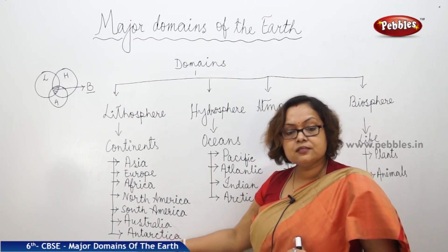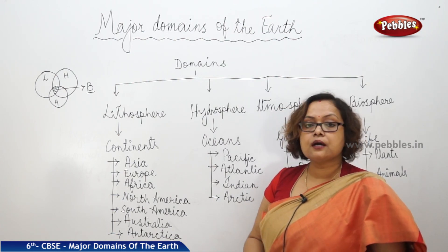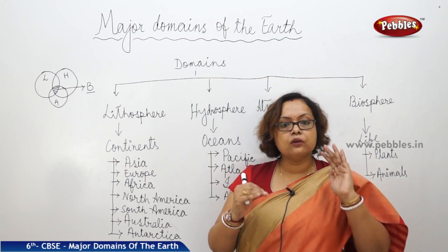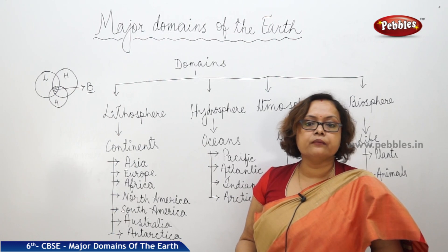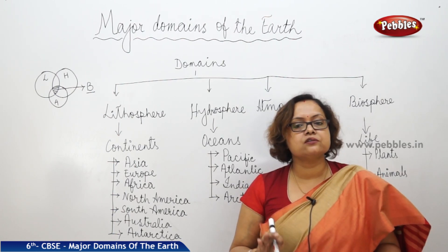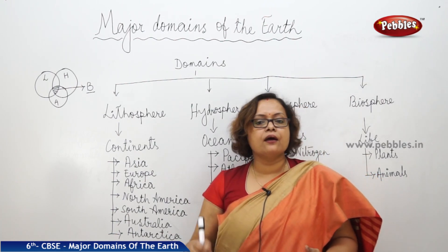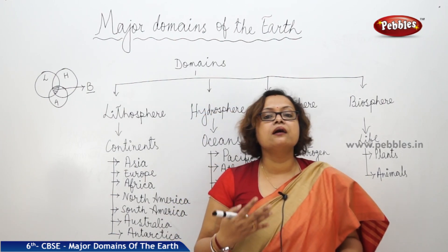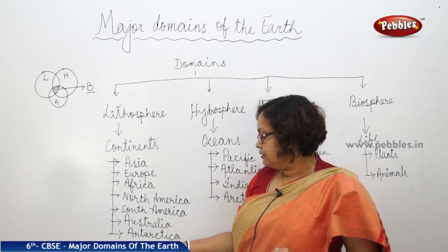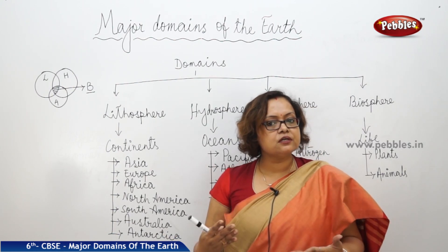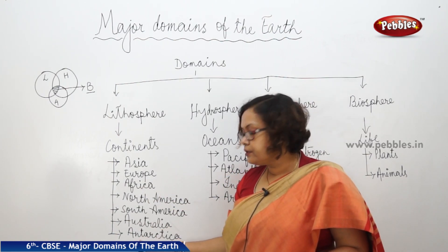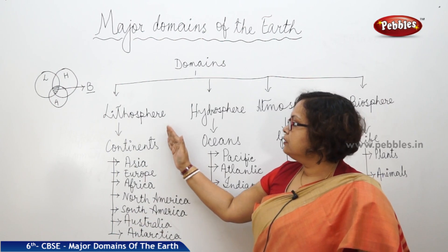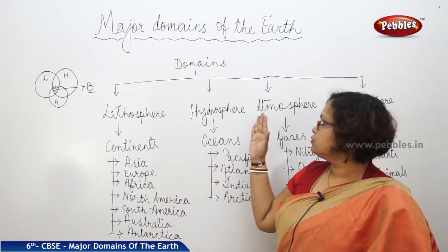The last continent is Antarctica, known as the ice continent — completely full of ice. Human habitation is not possible there as the temperature is too low to live for long. However, most countries, including India, have their research centers there. India's research centers are known as Dakshin Gangotri and Maitri. Most parts of Antarctica are still inaccessible.